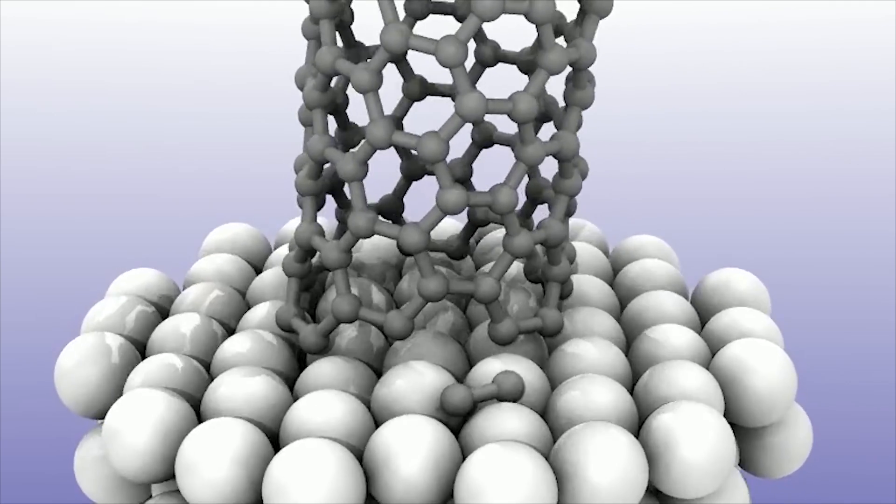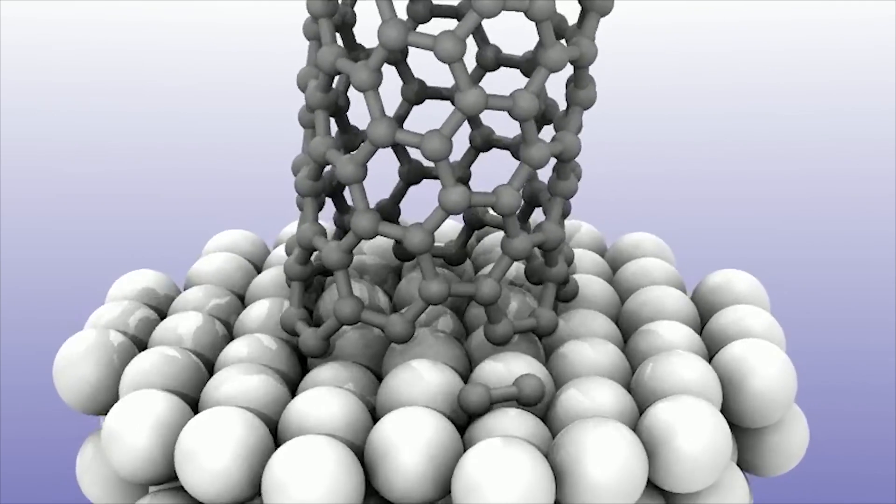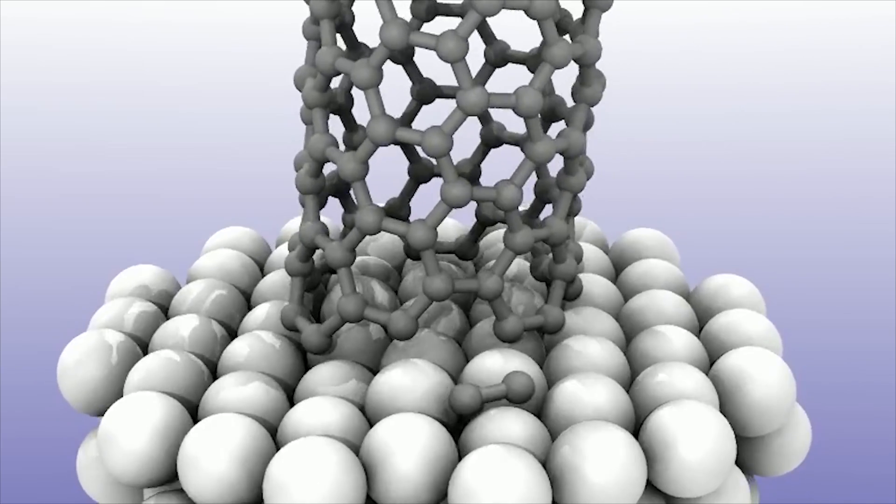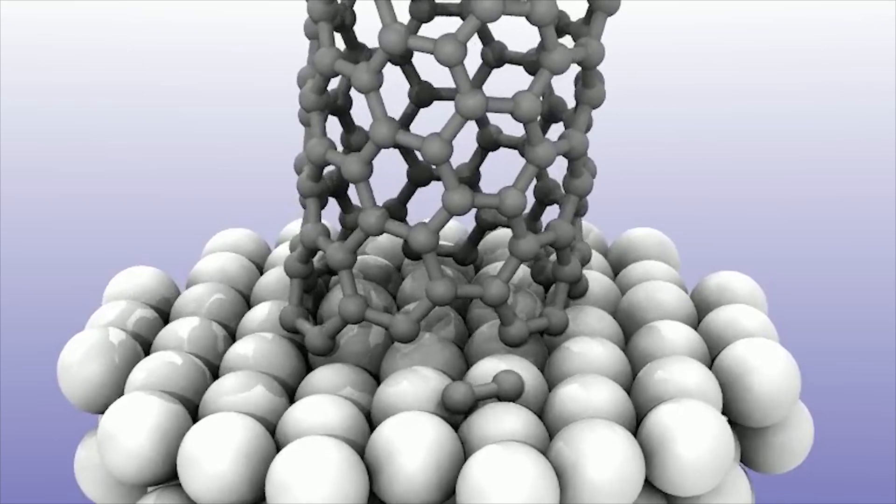In the bottom, this slab is a catalyst particle. This is metal. It can be nickel or it can be iron or it can be cobalt. What is important is this interface.